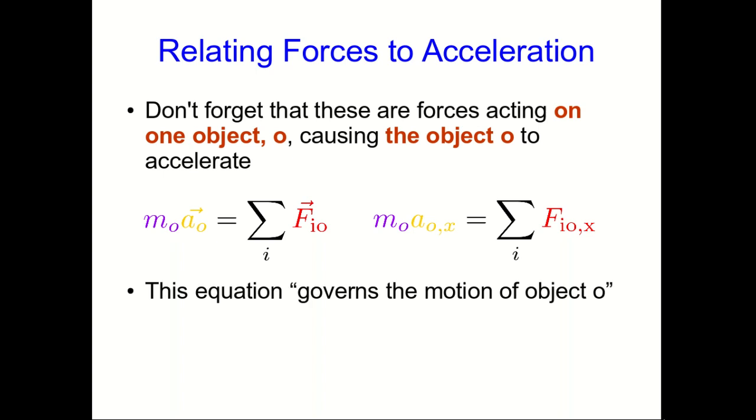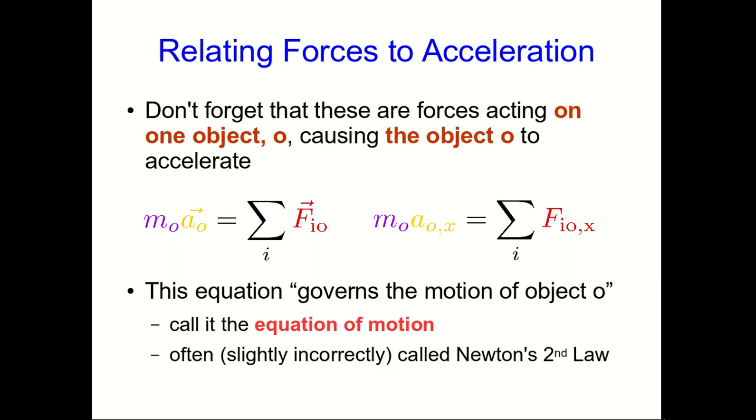This equation governs the motion of this object O—as long as we know the acceleration and the initial velocity and position we can figure out all the motion subsequently. And so we call this the equation of motion. You probably know it as Newton's second law.